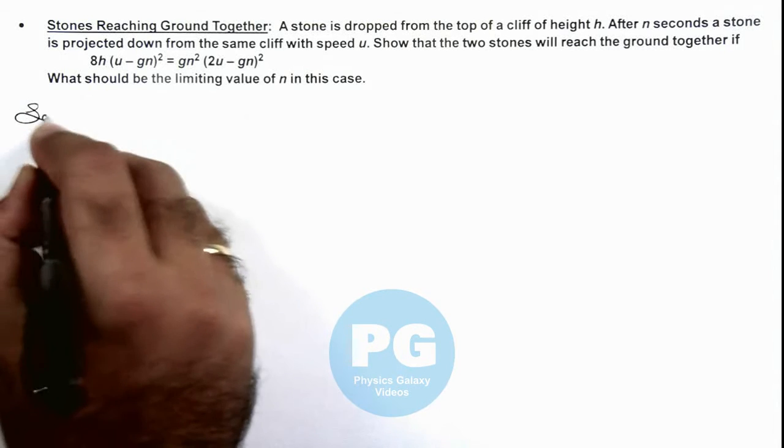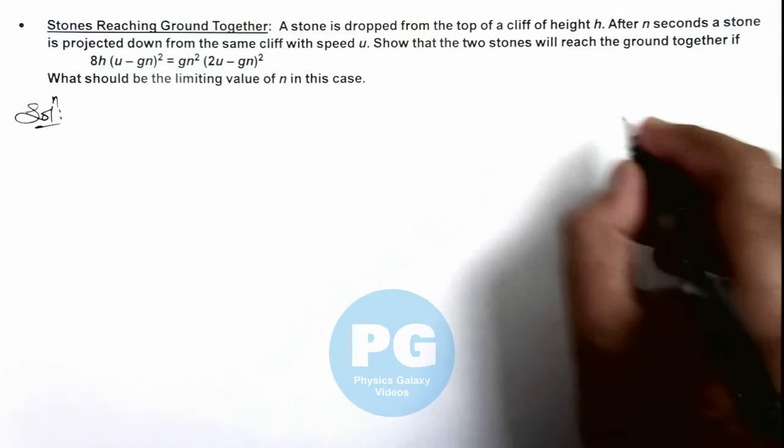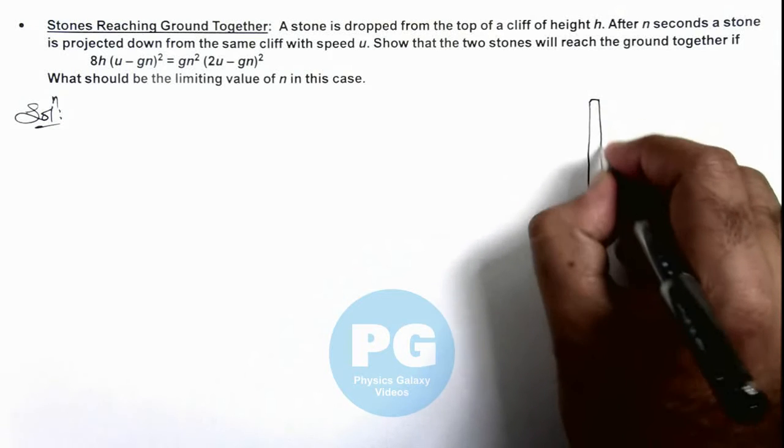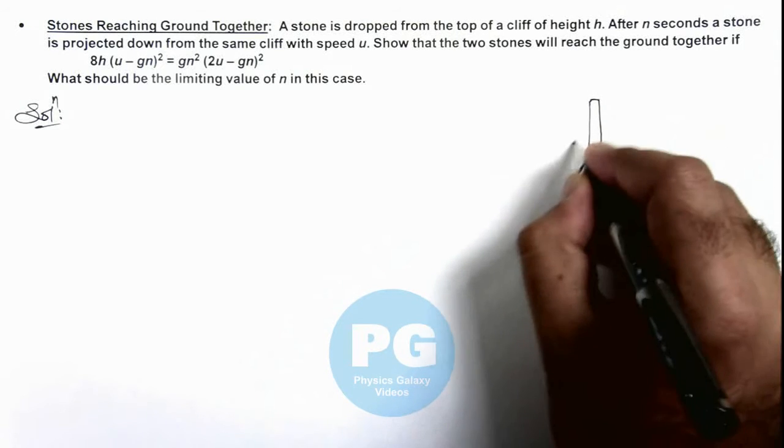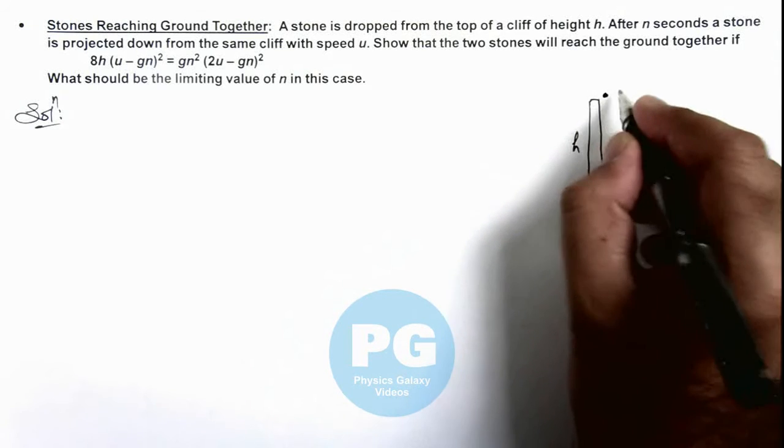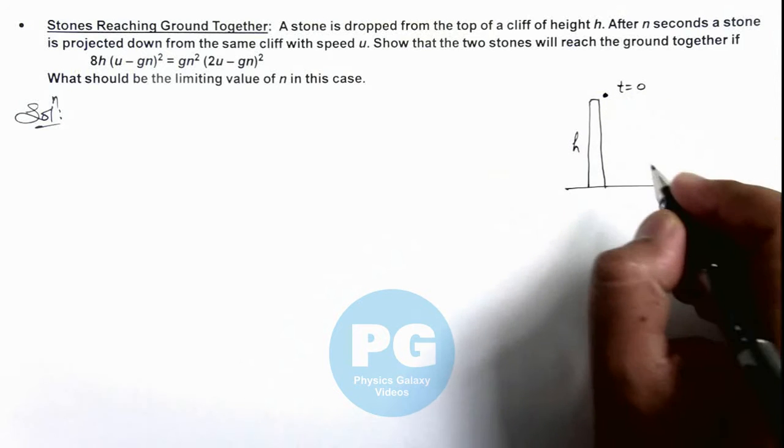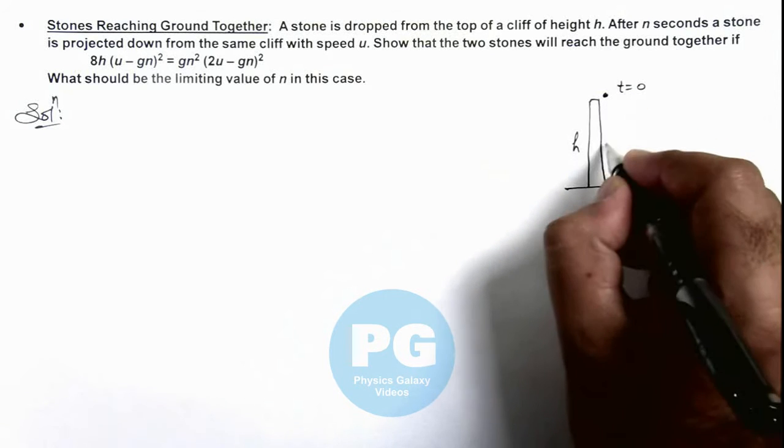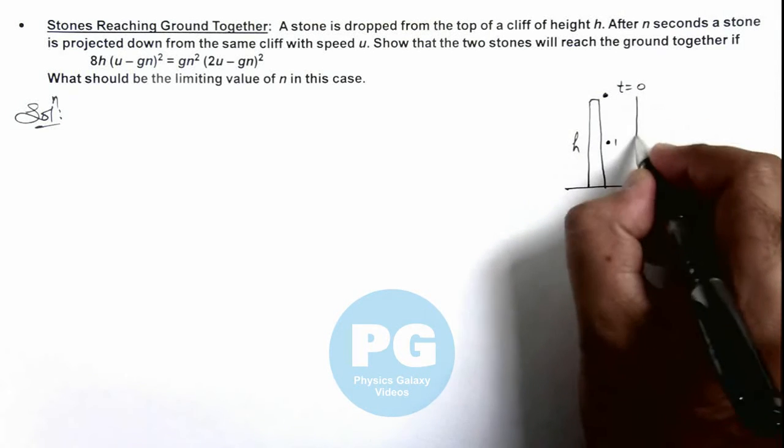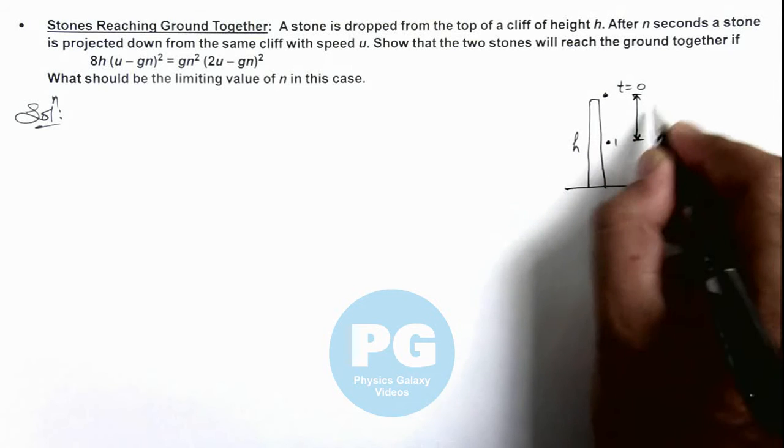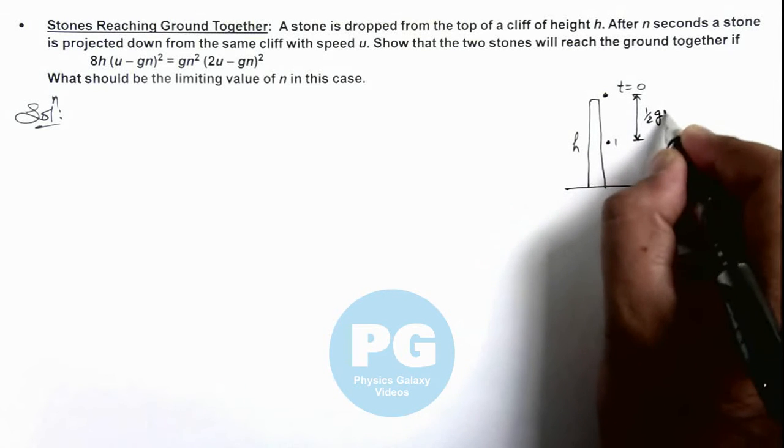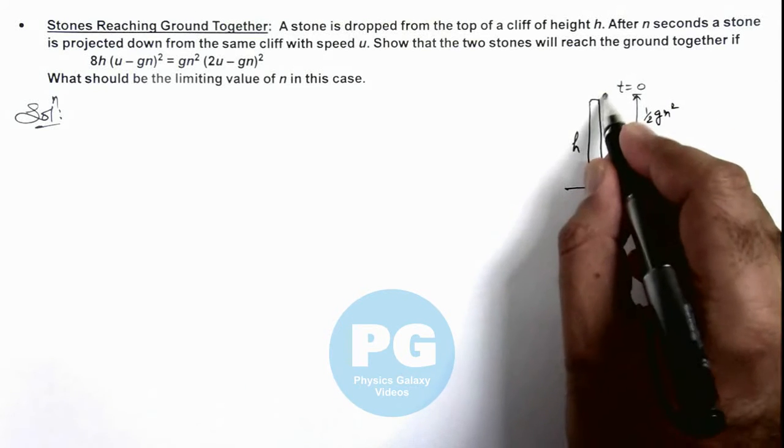If we analyze the situation, we are given a cliff of height h and a stone is dropped at t equal to zero. Now after n seconds, this stone 1 will be at a location which can be written as half g n square below the starting point.